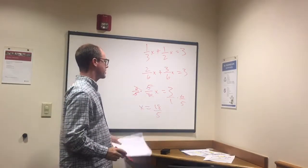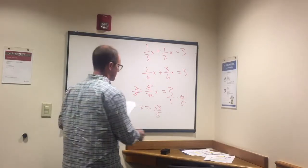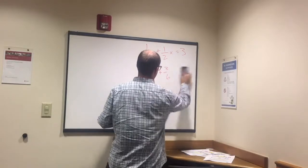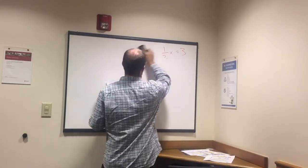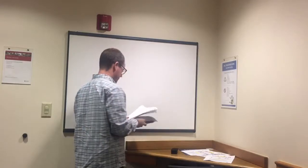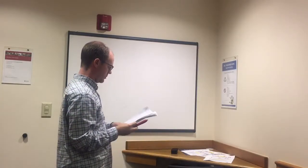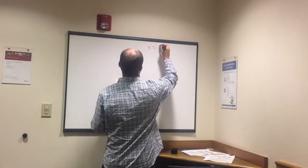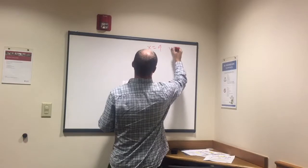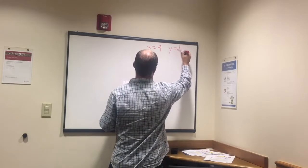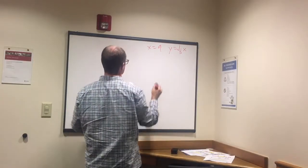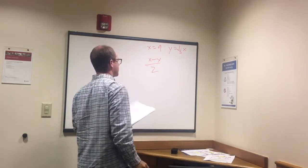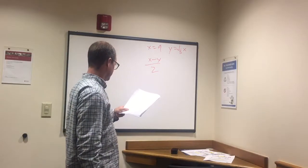X equals 18 fifths. 3 times 6 is 18, 1 times 5 is 5. One left. This one's a little more complicated to plug in, but we can do it. X equals 9, Y equals 1 third x, and you want to know x minus y over 2.